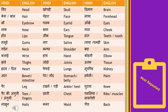Both for plural as well as singular, we will say 'daant' — you can use it as per the sentence context. 'Masude' means gums. 'Lar' means saliva. 'Twacha' ya 'chamdi' ko hum translate karte hai skin.